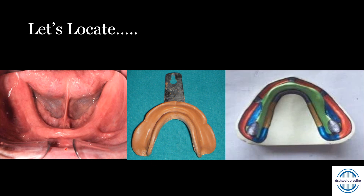Starting anteriorly, this is the labial frenum. We get a labial notch in the impression, and here is the labial frenum — we can see the blue color on the model. Then on both sides of the labial frenum there is the labial vestibule. We get labial flange on both sides — the red colored part is the labial vestibule. Then comes the buccal frenum; this is the buccal notch that we obtain in the impression.